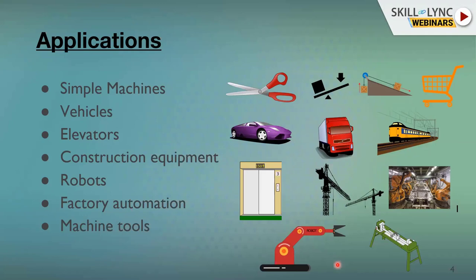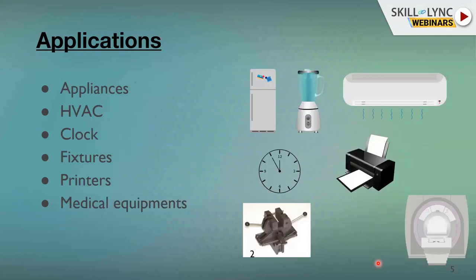Automated factory assembly lines use robots, which are also machines. A very classical example is the machine tool — the lathe machine, which has several mechanisms: a job held in a chuck rotating, and a tool held in a tool post translating. Several types of motions are involved. We also see machines in appliances like refrigerators, which have a compressor, and mixer grinders with a motor. Wherever something transforms available energy into useful work, that is a machine.